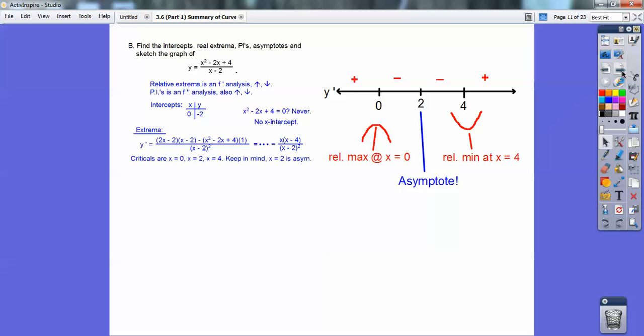There's a relative max at x equals zero, and I get my y-coordinate by plugging them into the original equation. And then I get a relative min at x equals four. So max at zero, negative two, and a min at four, comma six.